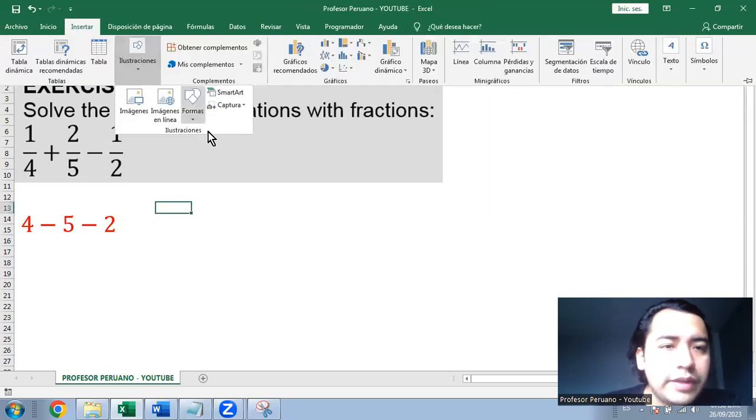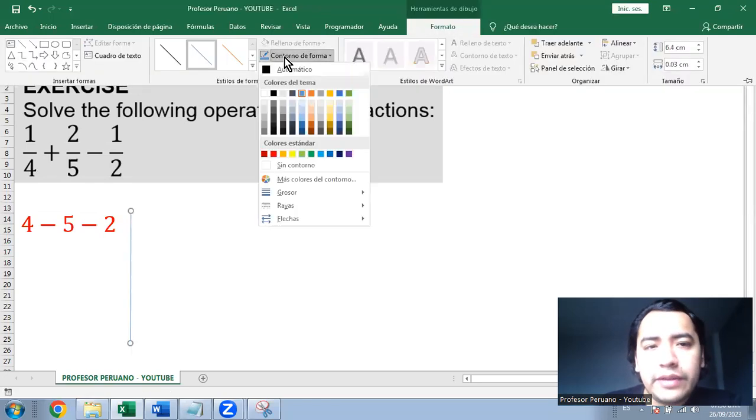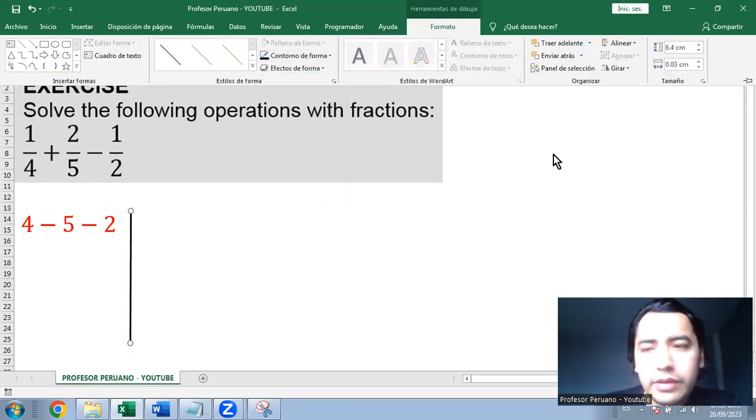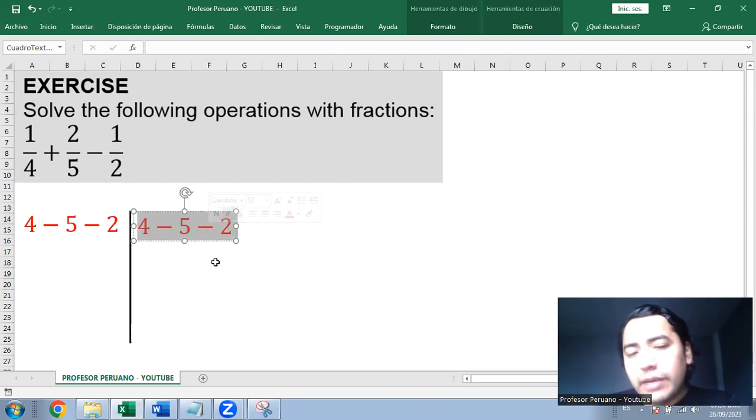So we take the denominators, we draw a vertical line on the right side of the numbers like this, and we start doing the decomposition by prime numbers.